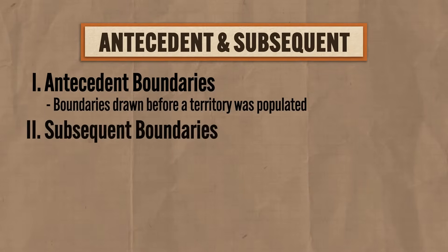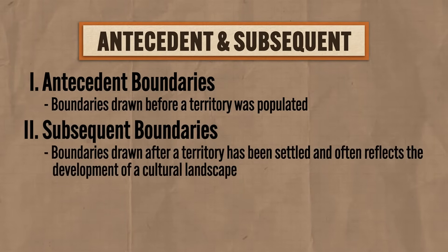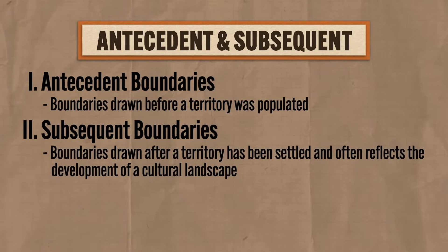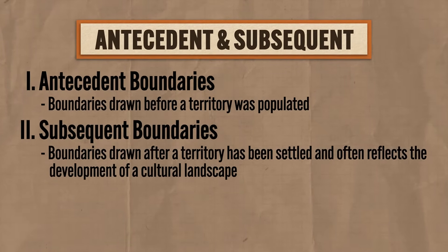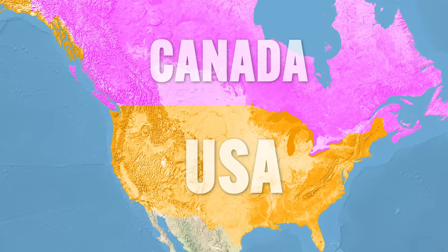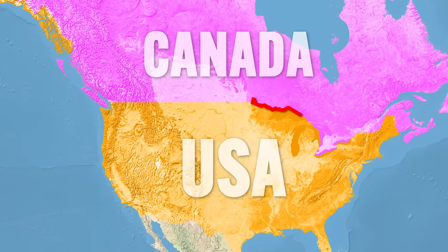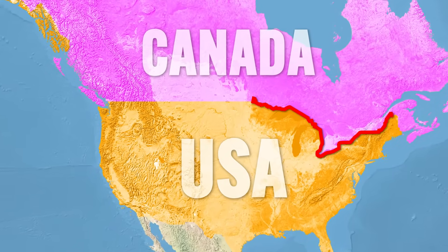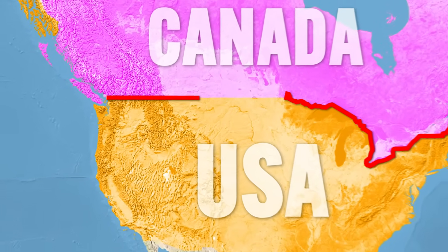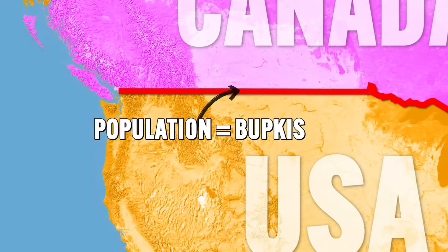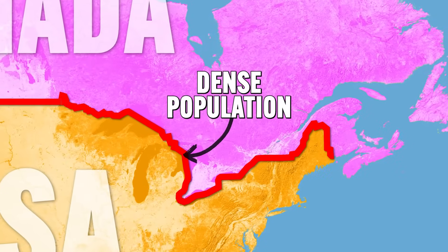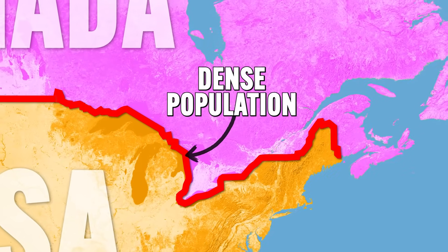Second, we have subsequent boundaries, which are boundaries drawn after a territory has been settled and often reflects the development of a cultural landscape. We can go to the other side of the United States to see an example — namely the border between Canada and the US on the east coast. Unlike the western United States, which had basically nothing for population, this area was highly populated from the earliest days of British colonization of the Atlantic coast. Because a sort of cultural boundary already existed, a formal subsequent boundary was established by treaty in 1842.